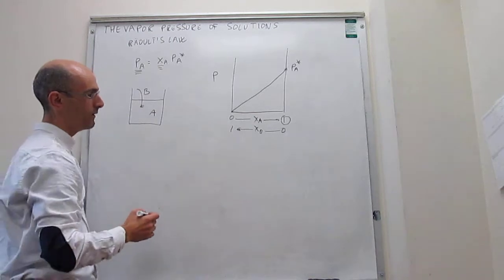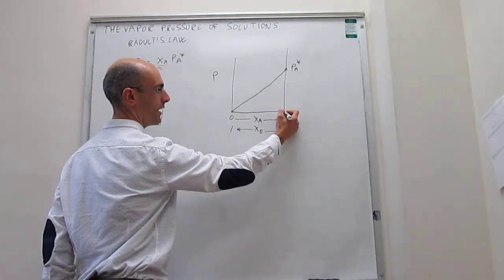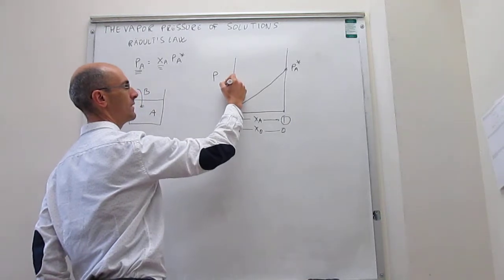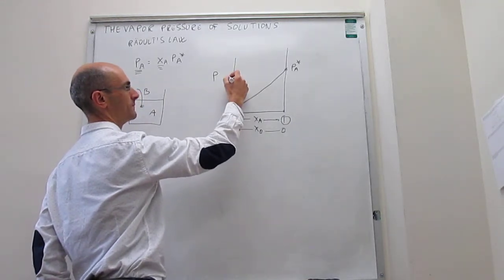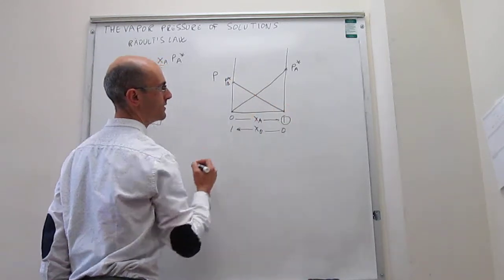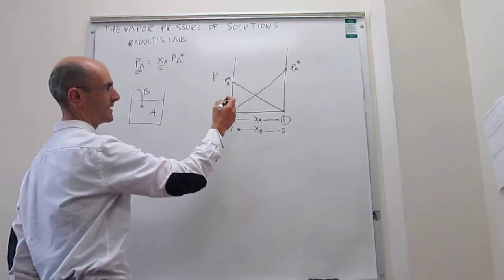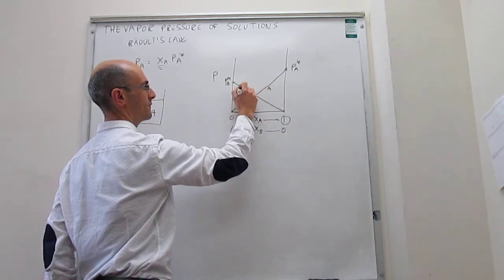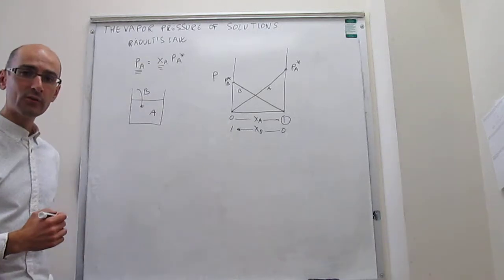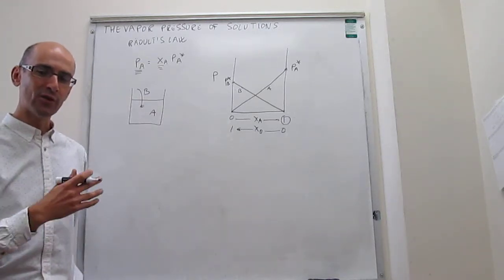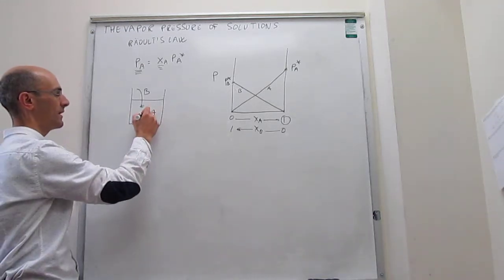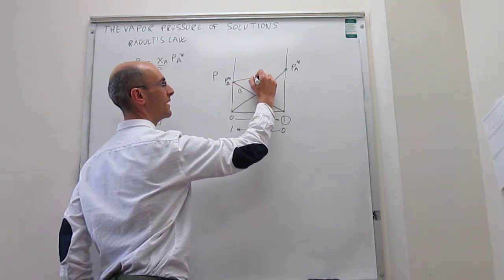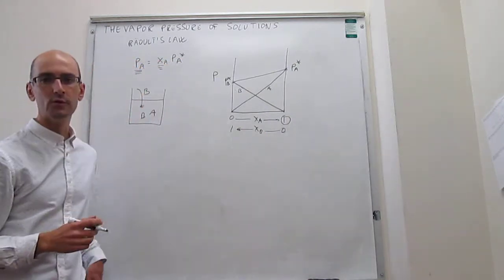What will happen for B? If you don't have any B at all, then there would be no vapor pressure of B. And if you only have B, then that would be the vapor pressure of B when pure. In the middle, you have Raoult's Law. We can then calculate the total vapor pressure of that liquid A and B together — the total pressure P_A and P_B — and that is just the sum of these two lines, which is conveniently traced by drawing a straight line between those two points.